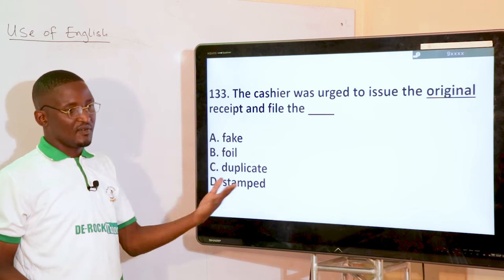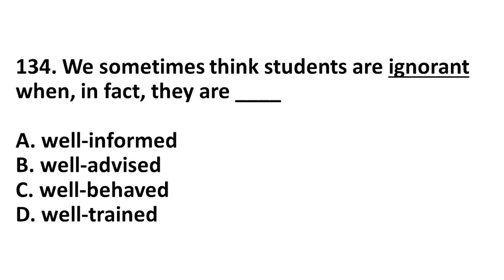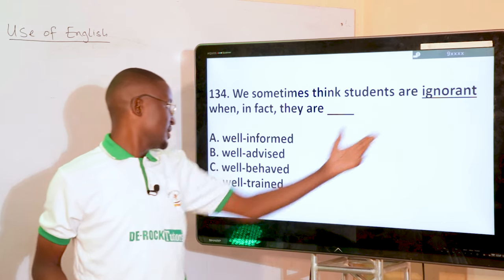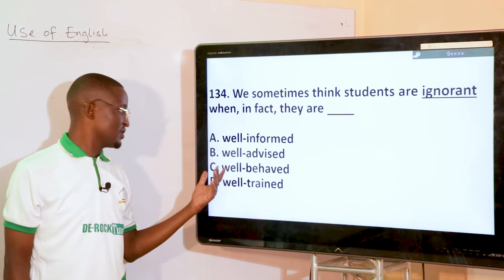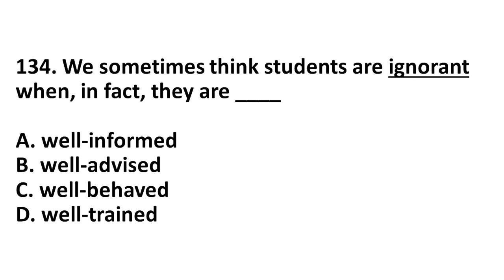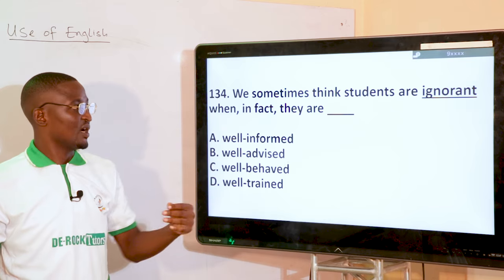We sometimes think students are ignorant when in fact they are dash. 'Ignorant' means knowing nothing. The antonym options include well-informed, well-advised, well-behaved, and well-trained. Well-informed stands here as a good antonym to ignorant as used in this context.